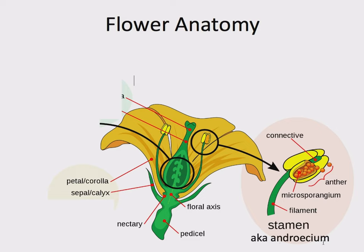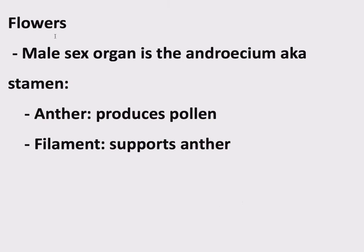What's actually going on inside the flower? One structure is called the stamen, or the androecium — a male structure. 'Andro' means male, like the term 'android' referring to a machine that looks like a man. The androecium, also known as the stamen, has a filament that supports an anther. The anther produces pollen, which are the male gametophytes. So the male sex organ within the flower is the androecium or stamen: an anther that makes pollen, supported by a filament.